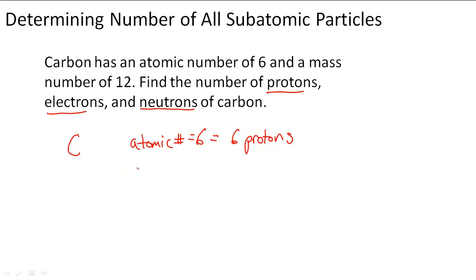Now we need to figure out the number of electrons. Since this is a neutral atom of carbon, we know that the number of protons has to equal and cancel out the charges of the number of electrons. So because it's neutral, it also has 6 electrons because we know it has 6 protons.